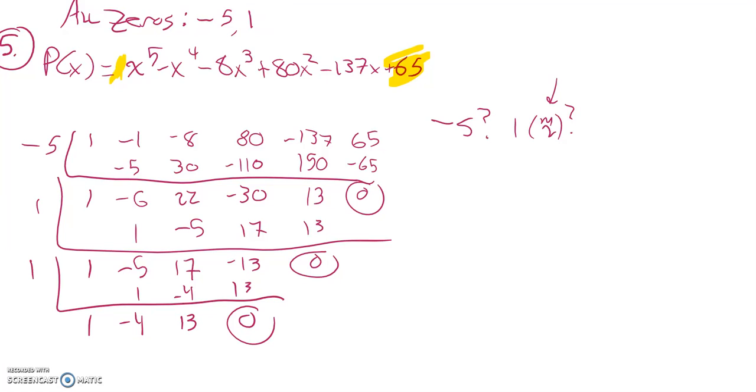So 1 does happen, and I think that 1 had a multiplicity of 2, so I'm going to try and take 1 out of it again. So bring it down, multiply and multiply and multiply. Look at that, boom! So notice what I did: I factored out an x+5, I factored out an x-1, I factored out x-1 again. Now what I'm left with is this quadratic: x^2 - 4x + 13.